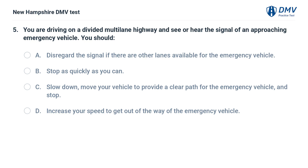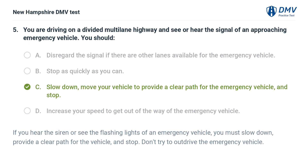You are driving on a divided multi-lane highway and see or hear the signal of an approaching emergency vehicle. You should: A) disregard the signal if there are other lanes available, B) stop as quickly as you can, C) slow down, move your vehicle to provide a clear path for the emergency vehicle, and stop, D) increase your speed to get out of the way. The answer is C. If you hear the siren or see the flashing lights of an emergency vehicle, you must slow down, provide a clear path for the vehicle, and stop. Don't try to out-drive the emergency vehicle.